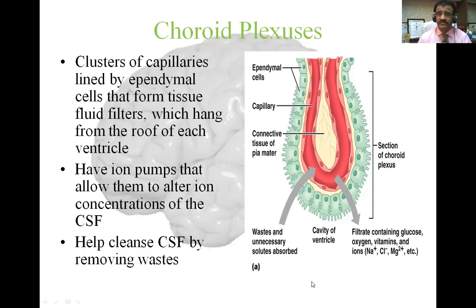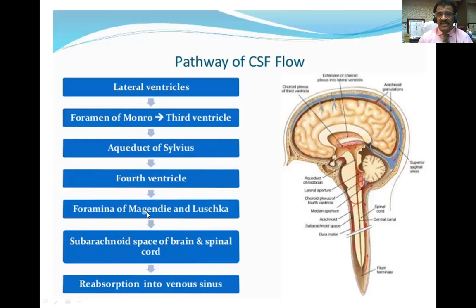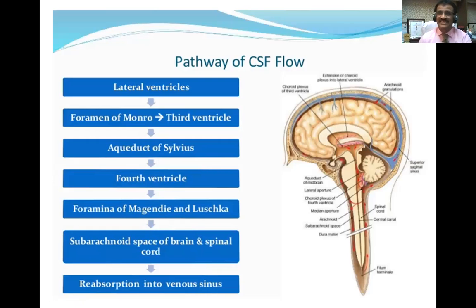The pathway of CSF flow: from the lateral ventricles through the foramen of Monro or interventricular foramen to the third ventricle; from the third ventricle via the aqueduct of Sylvius or cerebral aqueduct to the fourth ventricle; from the fourth ventricle via the foramen of Magendie and foramen of Luschka to the subarachnoid spaces of brain and spinal cord. From the subarachnoid space it is drained back by reabsorption into the dural venous sinuses. You can see the red choroid plexuses in the lateral and fourth ventricles, and the superior sagittal sinus in blue.